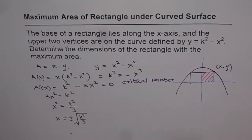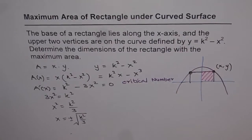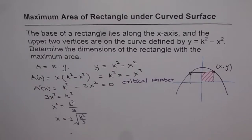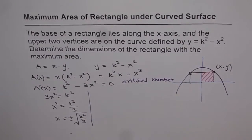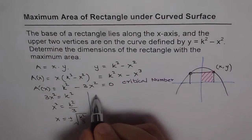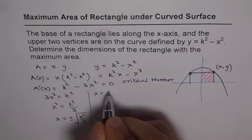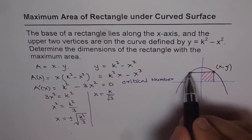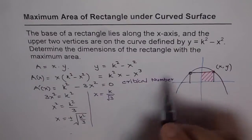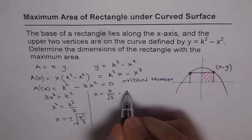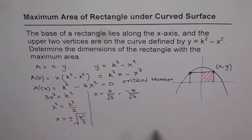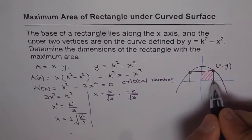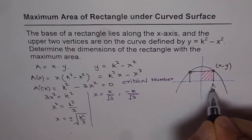We get two symmetric critical points. Since we are considering the right half, we focus on the positive value. The critical numbers are x = k over square root of 3 and x = minus k over square root of 3. At present we consider the positive point; the point on the curve corresponds to x = k over square root of 3.